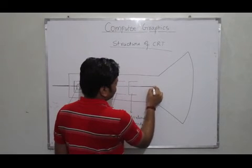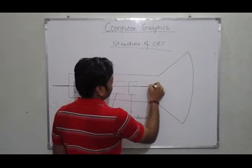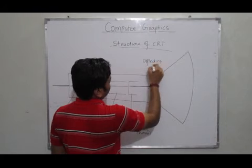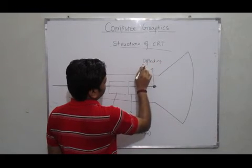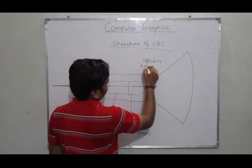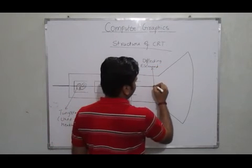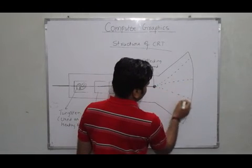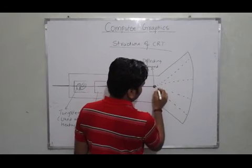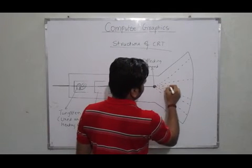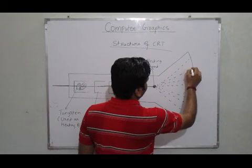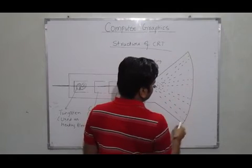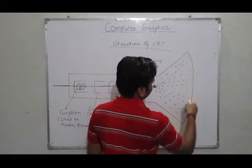At this point, there are some deflecting elements which will deflect this electron beam to travel in multiple directions. And the deflected beam will move to fall on the monitor screen.